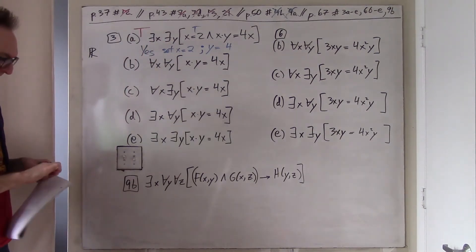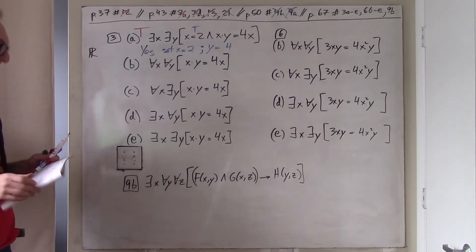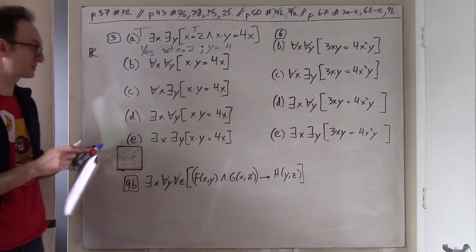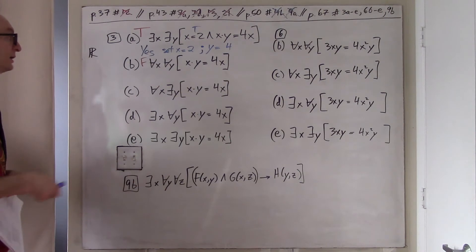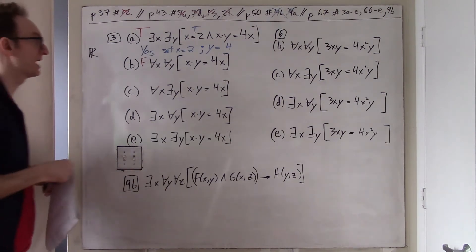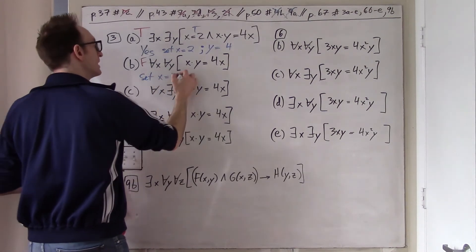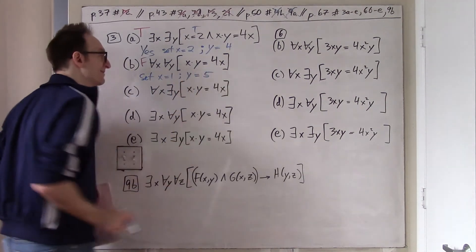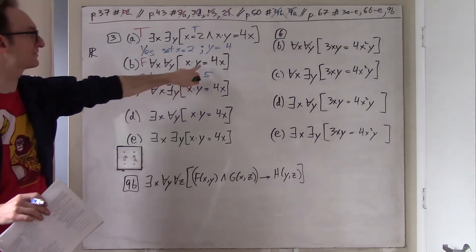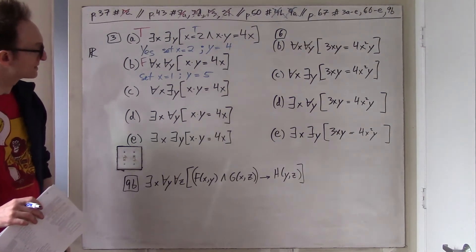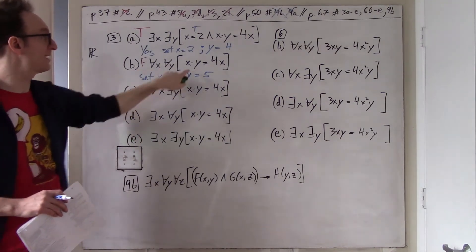3B: For all X and for all Y, XY = 4X. That is certainly false. For example, set X = 1 and Y = 5. Then the left-hand side is 5 but the right-hand side is 4. So it's not true that for any possible X and Y, this statement holds.